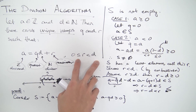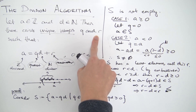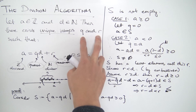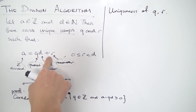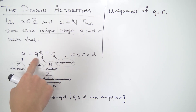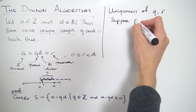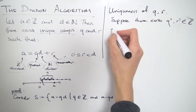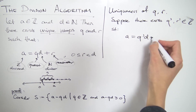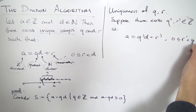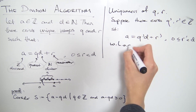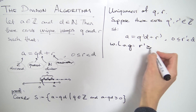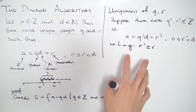We've established the condition 0 ≤ R < D. The last thing to show is that Q and R are unique. We need to show there can't be two other integers Q' and R' satisfying the same property. To show uniqueness, suppose there exist integers Q' and R' such that A equals Q'D plus R', with zero less than or equal to R' less than D. We assume without loss of generality that R' is greater than or equal to R — if not, we just switch the labels.